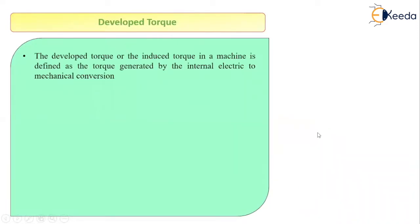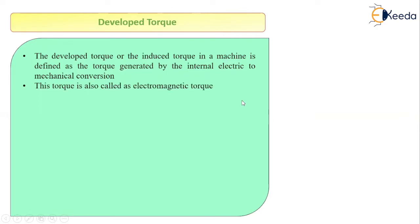But before going forward with the formula for the developed torque, let me explain what exactly is the developed torque. We know that a machine is a device which does the electromechanical energy conversion. In case of a three-phase induction motor, it converts electrical energy to mechanical energy. During this internal electromechanical conversion, whatever torque is generated or induced, that torque is called the developed torque. So, the developed torque or induced torque is defined as the torque generated by the internal electric to mechanical conversion. This torque can also be called electromagnetic torque.